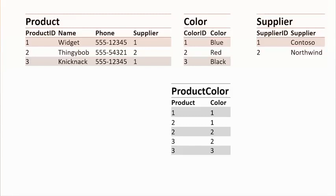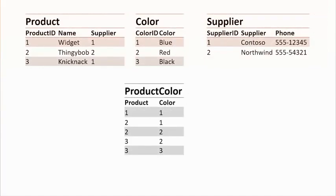I'm now taking my data that was originally a table in Excel and splitting it into multiple tables joined on keys — it's beginning to look much more like a relational database. There's still another problem: does a product have a phone number? No. So we've got a phone column in the product table, but that really isn't related to a product — that's something to do with the supplier. All of the columns in a table should depend on the primary key for that table. So the phone column should be moved across to the supplier table.